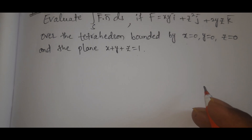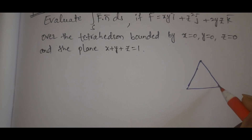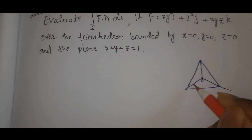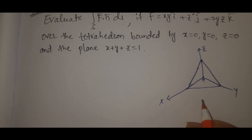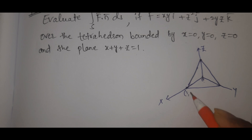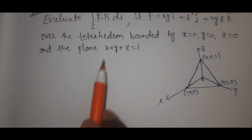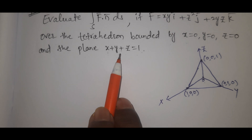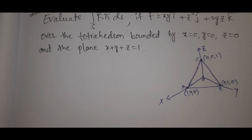This is a tetrahedron. Let's look at the diagram. It is a triangle. The origin point is (0, 0, 0). On the x-axis, y-axis, and z-axis, the vertices are: point A is (1, 0, 0), point B is (0, 1, 0), and point C is (0, 0, 1). The plane equation is x/1 + y/1 + z/1 equal to 1, giving x = 1, y = 1, z = 1 at the respective intercepts.